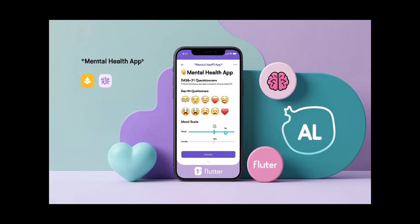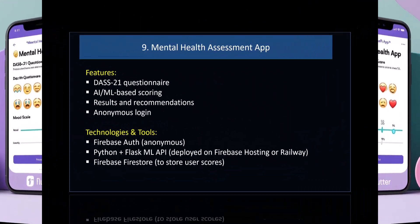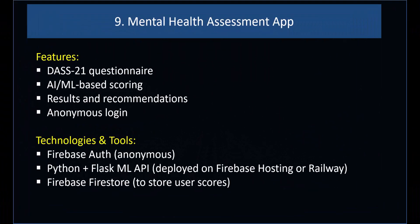Number 9: Mental Health Assessment App. Features: DSS-21 questionnaire, AI/ML-based scoring with results and recommendations, and anonymous login. Technologies and tools: Firebase Auth (anonymous), Python plus Flask ML API deployed on Firebase Hosting or Railway, and Firebase Firestore to store user scores. Number 10.